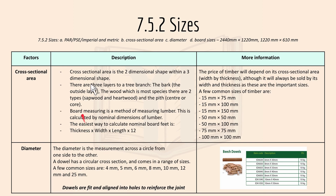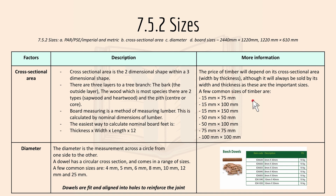Then we have cross-sectional area, which is a two-dimensional shape within a three-dimensional shape. There are three layers to a tree branch: the bark, the wood (which has two types), and the pith. Board measuring is a method of measuring lumber or timber, calculated by the nominal dimensions. The easiest way to calculate nominal board feet is: thickness × width × length ÷ 12. The price of timber depends on its cross-sectional area — width by thickness — although it is always sold by its width and thickness as these are the more important sizes.